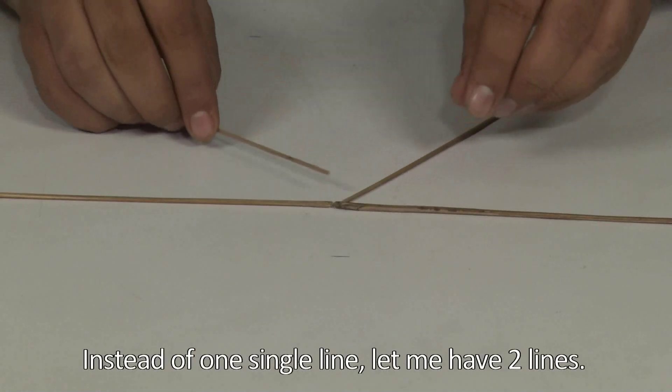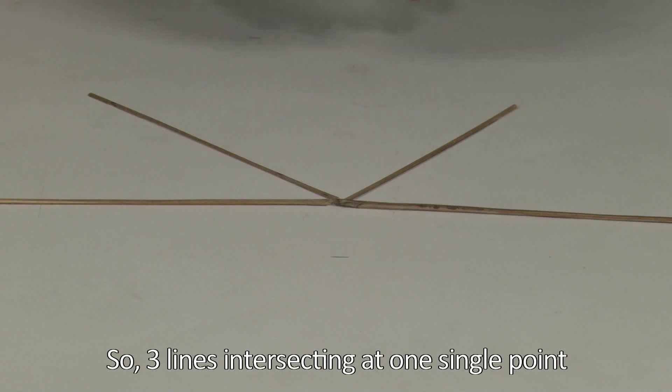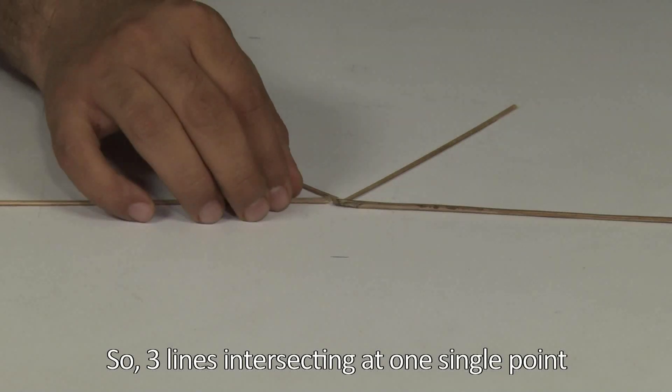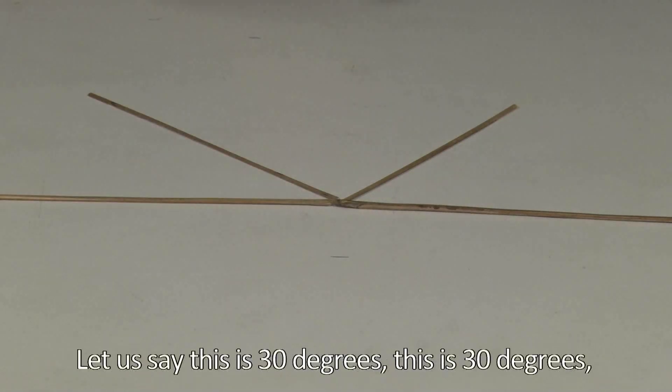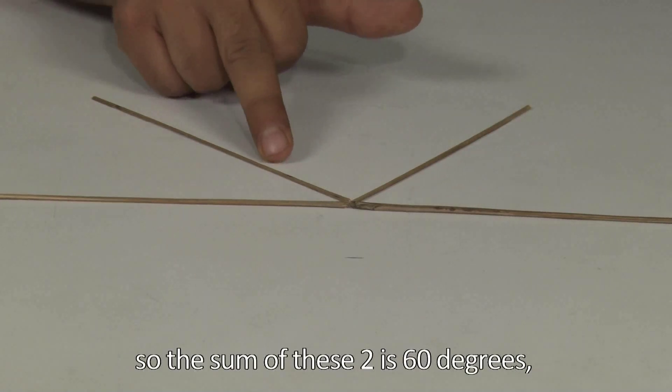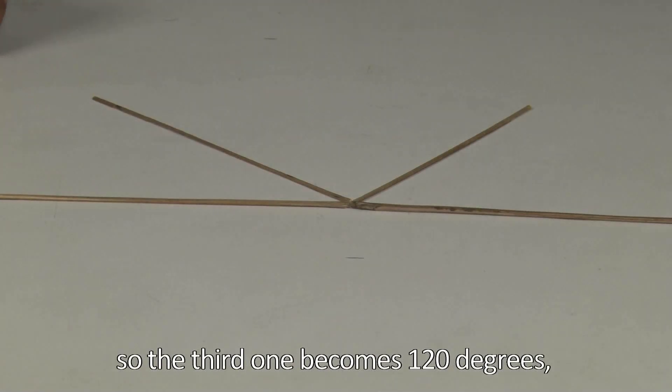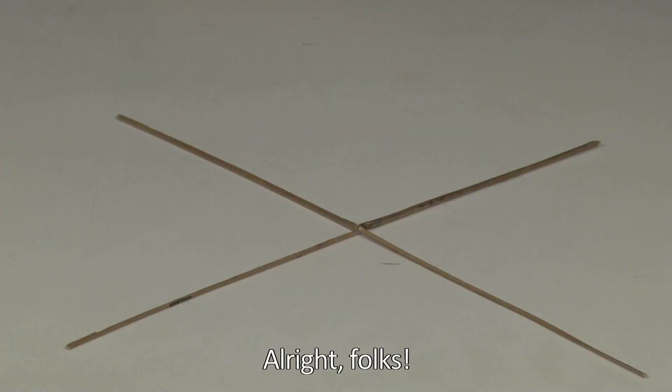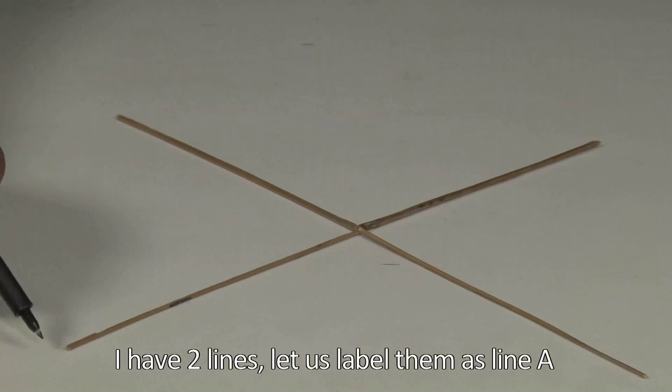of one single line, let me have two lines. So three lines intersecting at one single point are making three angles. Let's say this is 30 degrees, this is 30 degrees, so the sum of these two is 60 degrees. Then the third one becomes 120 degrees, which is 180 minus 60. All right, folks. I have two lines. Let's